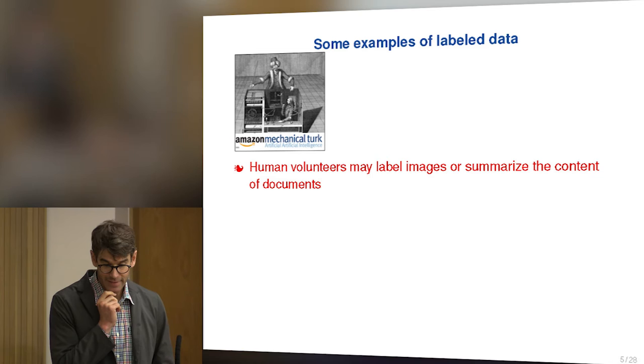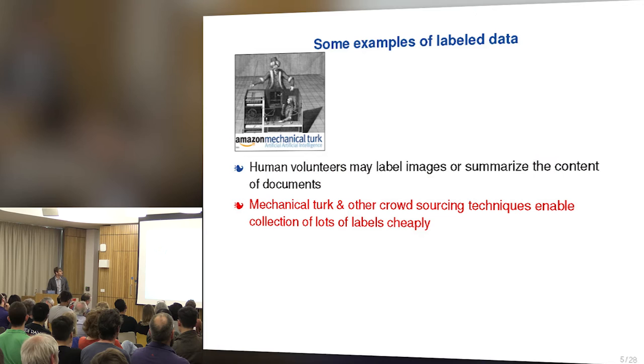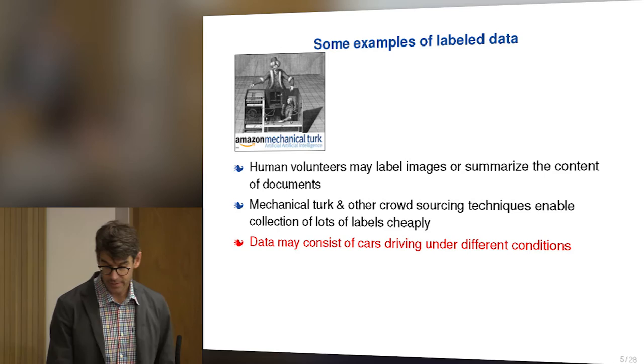If we can get human volunteers to label or summarize document content, we can get a lot of labeled data using something like Amazon Mechanical Turk or other crowdsourcing techniques. You might also collect data on cars driving under different conditions. A very popular example of AI success was AlphaGo, where they trained a machine to play Go — thought to be much more complicated than chess. One reason it succeeded was that they could generate tons of labeled data by having machines play against each other.